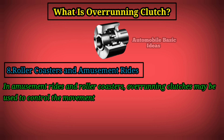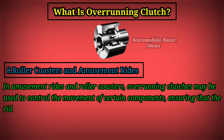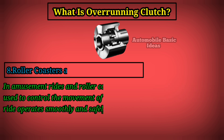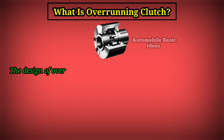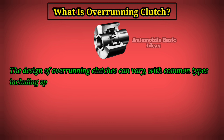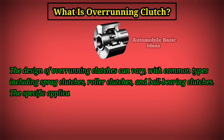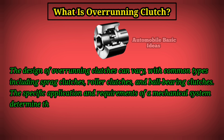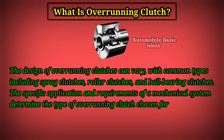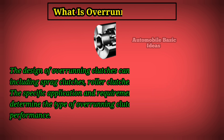Eight, roller coasters and amusement rides. In amusement rides and roller coasters, overrunning clutches may be used to control the movement of certain components, ensuring that the ride operates smoothly and safely. The design of overrunning clutches can vary, with common types including sprag clutches, roller clutches, and ball bearing clutches. The specific application and requirements of a mechanical system determine the type of overrunning clutch chosen for optimal performance.